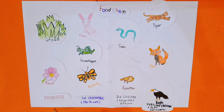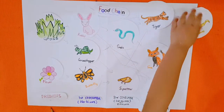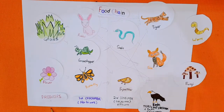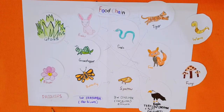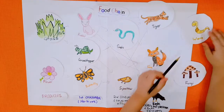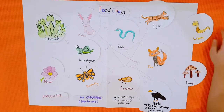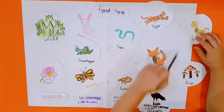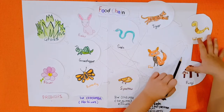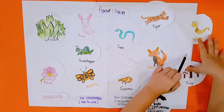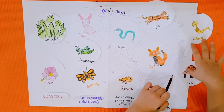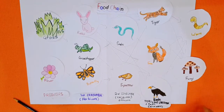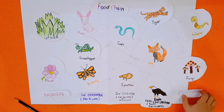Lastly, there are worm and fungi. They eat dead animals. These are called decomposers.